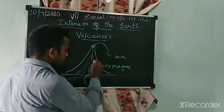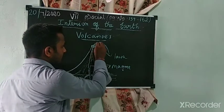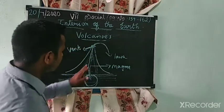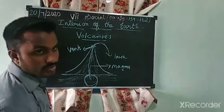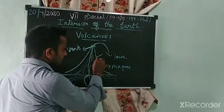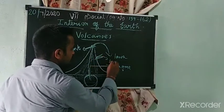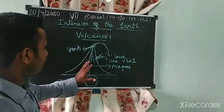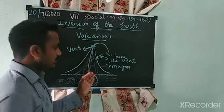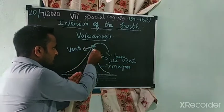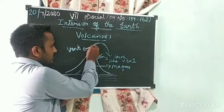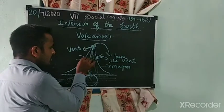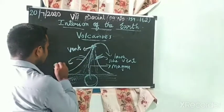The magma comes out through an opening called a vent. This open place is called a vent. Sometimes, if our side also has an opening, it is called a side vent. The magma will come to the surface of the earth through the side as well, so that is called a side vent.